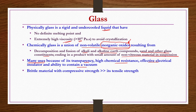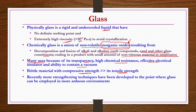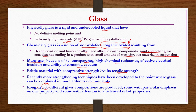Glass is a brittle material having very high compressive strength compared to its tensile strength. Recently, more strengthening techniques have been developed to the point where glass can be employed in more adverse environments, because of which roughly 800 different glass compositions are being produced — some emphasizing one particular property, others emphasizing a balance amongst different types of properties.